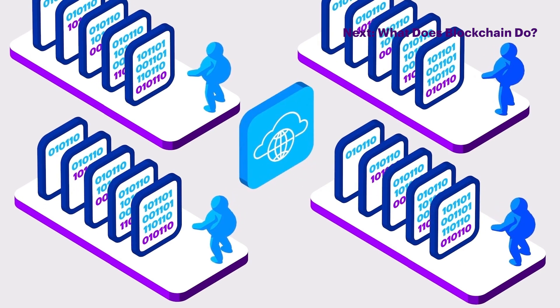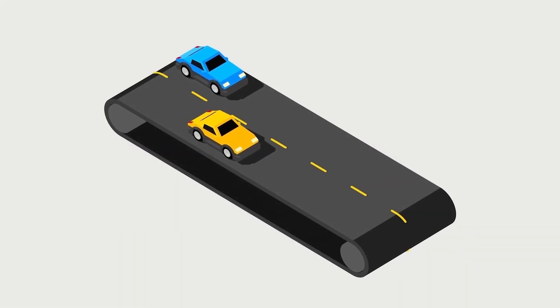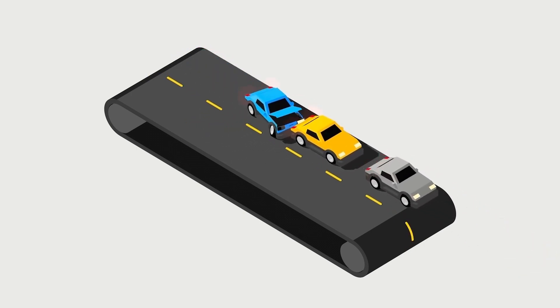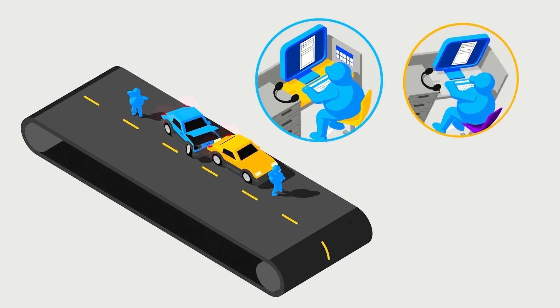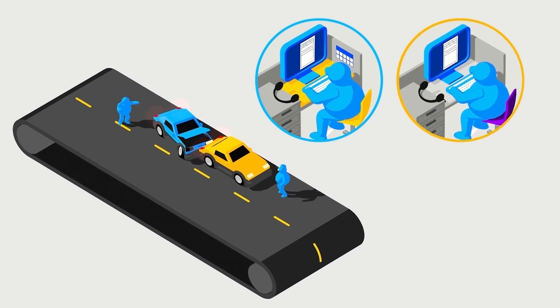What does blockchain do? To better understand, let's start with a simple explanation: two cars get into a minor traffic accident. Both drivers independently contact their respective insurance companies, notifying them of the accident.